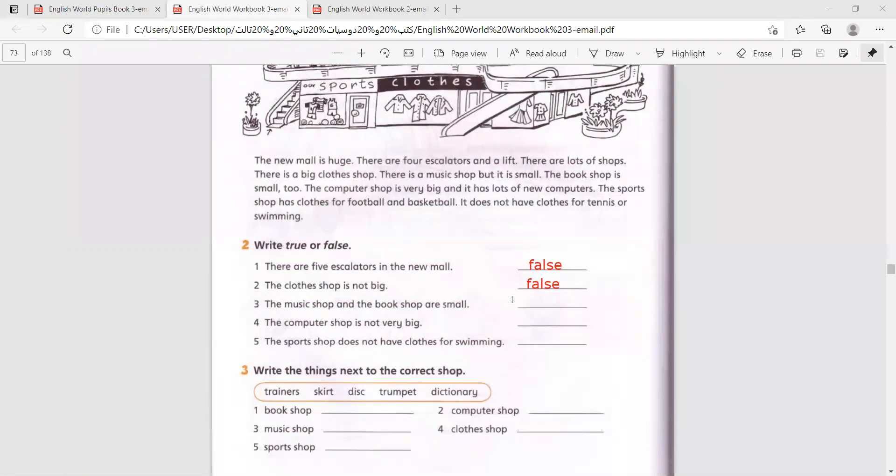The music shop and the bookshop are small. True. The computer shop is not very big. False. The sports shop does not have clothes for swimming. True.